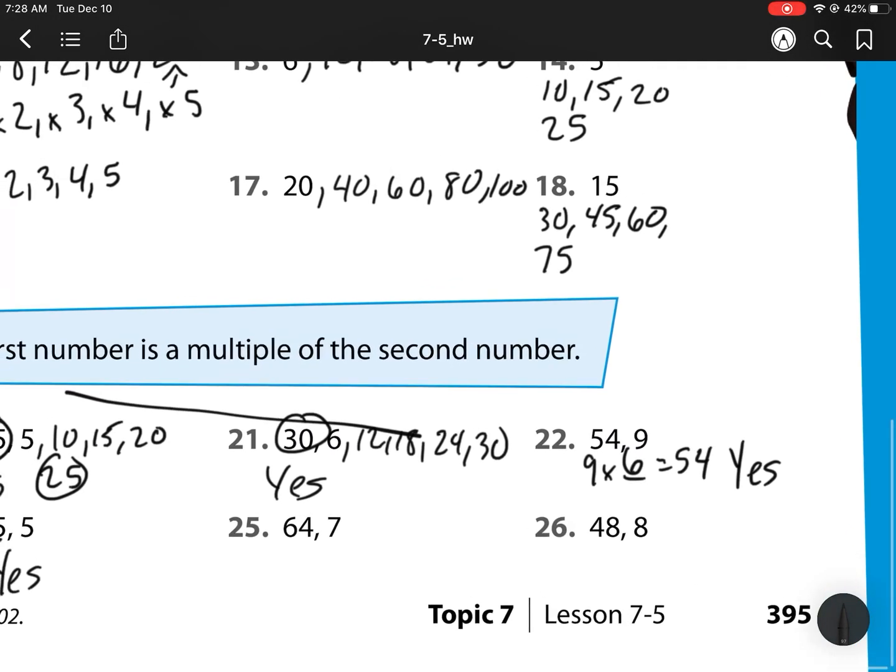For 25, we're thinking 7 times what equals 64? Well, I know 7 times 9 is 63. 7 times 10 is 70. Since this is right in the middle, there's no number that's between 9 and 10 I can multiply to get 64. So, this one is a no.